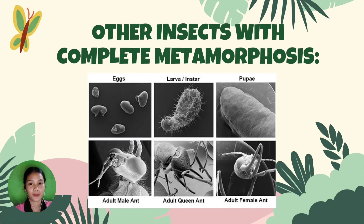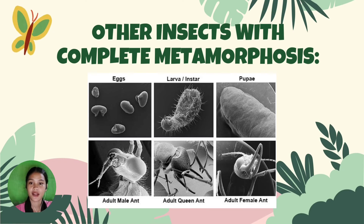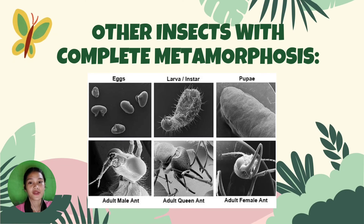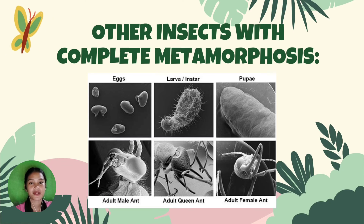Other insects with complete metamorphosis include beetles, bees, ants, butterflies, moths, fleas, and mosquitoes. Ants begin as an egg, then go through many instar or larva stages and a pupal stage before becoming adults. There are three possible adult forms that an ant can become: male ant, queen ant, or female ant. These images are from a scanning electron microscope.